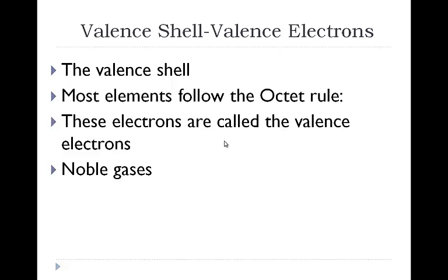The valence shell is the outermost energy level that contains electrons. Most elements are going to gain or lose electrons in order to follow the octet rule. Remember, the octet rule is going to be 8 electrons in the outer shell. This is going to be made up of both the S and the P sublevels.